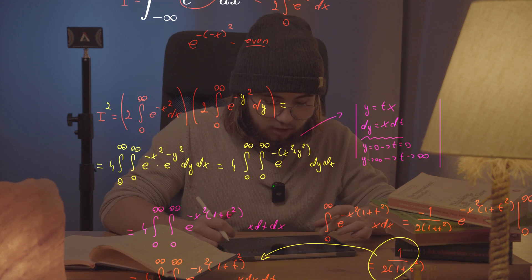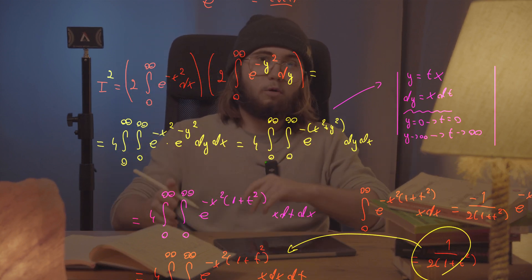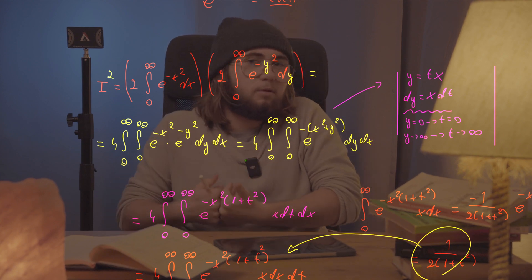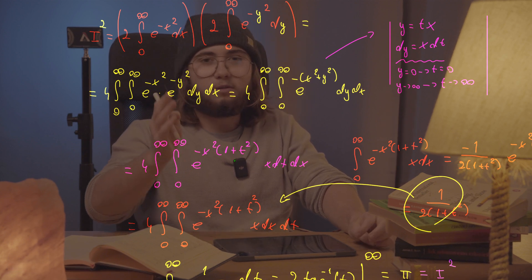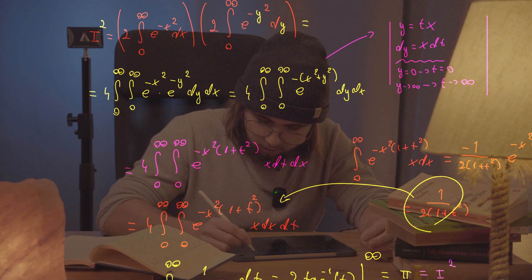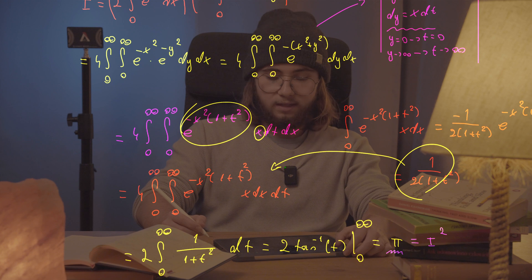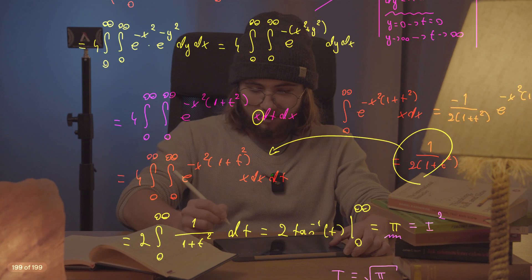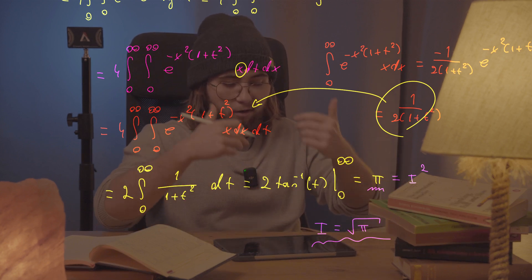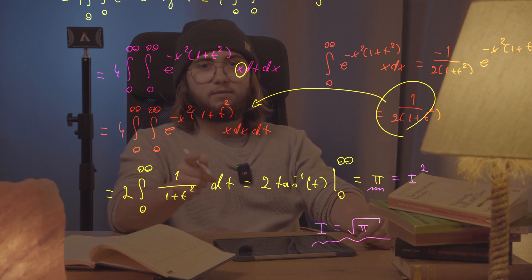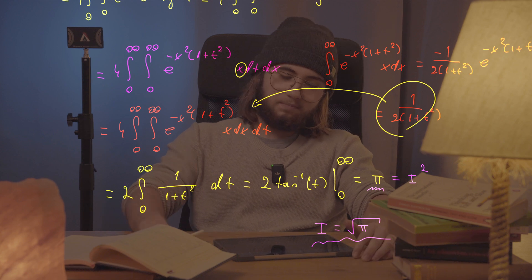To summarize: we set the integral equal to I, then re-expressed I squared as four times a double integral. We used the change of variables y equals x times t to get an x in front of dt dx, enabling a u-substitution to evaluate the inner integral. Plugging back in and integrating via arctangent gave us that the integral from negative infinity to infinity of e to the negative x squared equals the square root of pi.